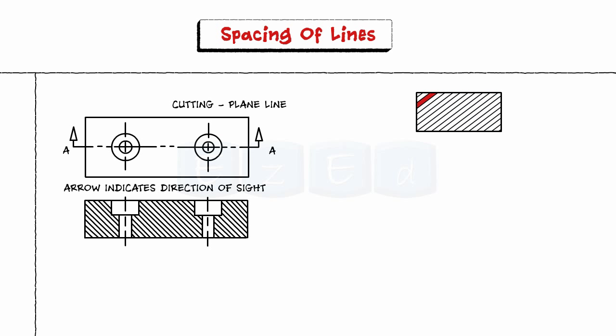The space between the hatching lines should be in proportion to the size of the hatched area. Minimum spacing should not be less than 1, 2, 3 mm.